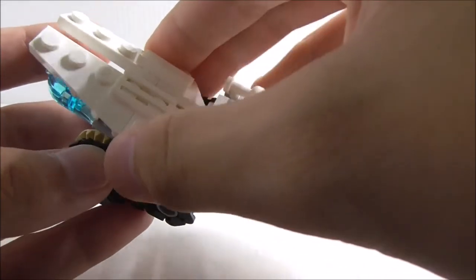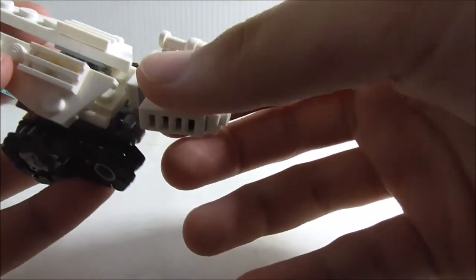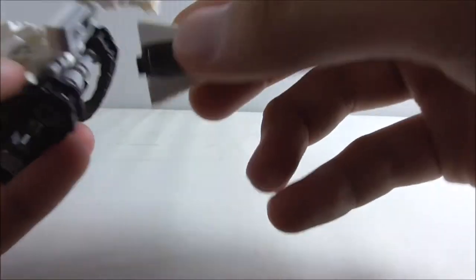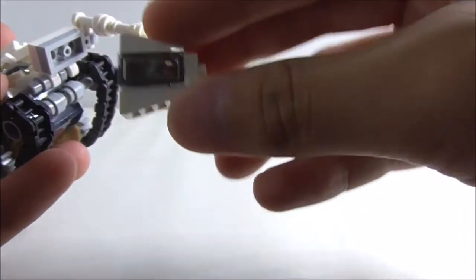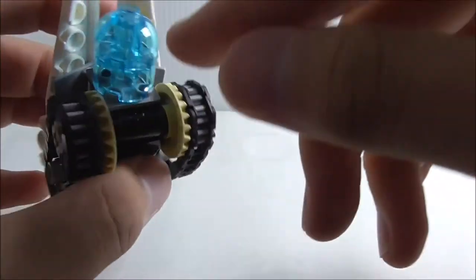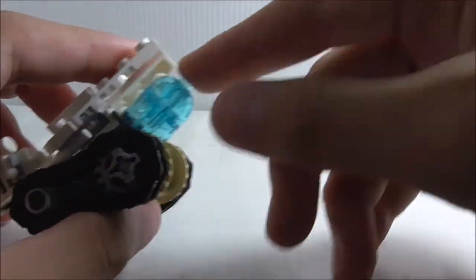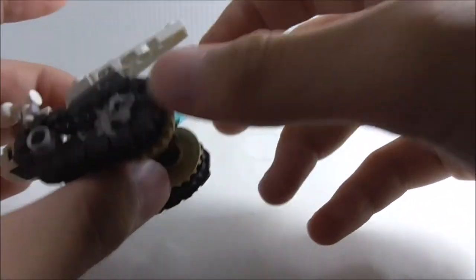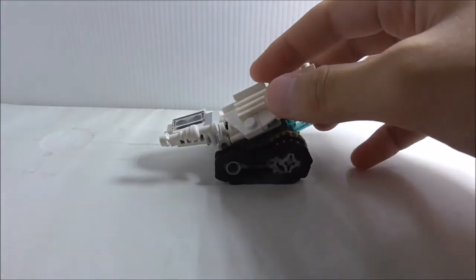This one you can also move around, but it's connected with the cockpit which is just connected with one stud. At the back here you've got this ice container type of thing. But aside from that, that's pretty much it for the ice tank.